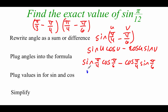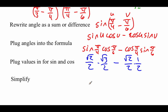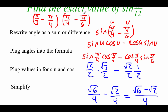Replacing with unit circle values: sine of pi over 4 is root 2 over 2, cosine of pi over 6 is root 3 over 2, minus cosine of pi over 4 which is root 2 over 2, times sine of pi over 6 which is 1/2. Multiplying gives root 6 over 4 minus root 2 over 4, and combining fractions gives root 6 minus root 2 all over 4 as our final answer. You can also check it using pi over 3 minus pi over 4 — you should get exactly the same answer.